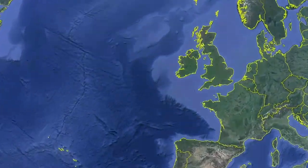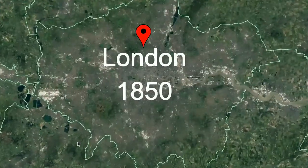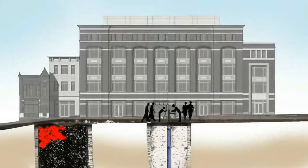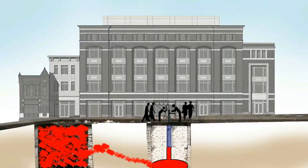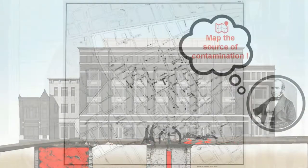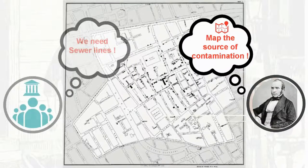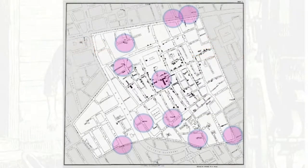Mid 19th century London. The source of a deadly epidemic in a crowded neighborhood was puzzling city officers. A physician named John Snow started mapping the outbreak with the location of water pumps and cesspools, and a solution was found. The map went on to create history by not only preventing thousands of deaths but also for showing the role of spatial analysis in shaping public policies for human development.